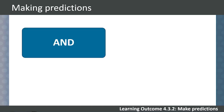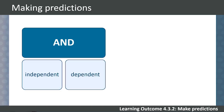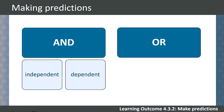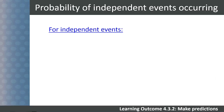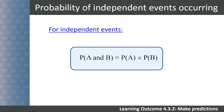When working with the word AND, students need to determine if the events are independent or dependent. When working with the word OR, students need to determine if the events are mutually exclusive or mutually inclusive. The probability of independent events occurring: remember that independent events have no influence on each other. The probability of two independent events occurring is the product of the probabilities of each event: probability of A and B equals probability of A multiplied by probability of B.